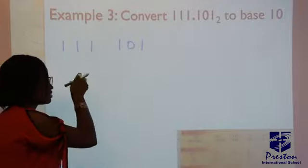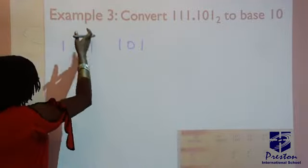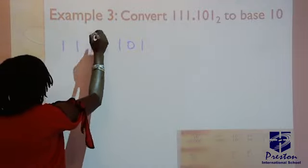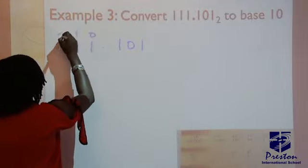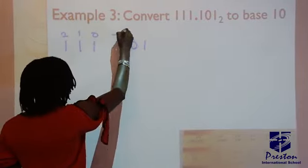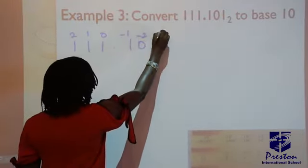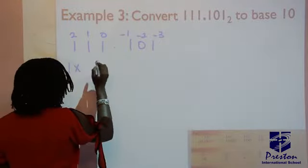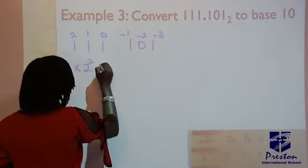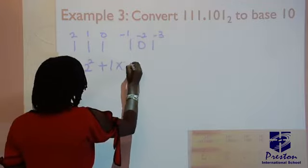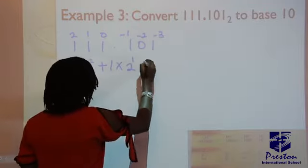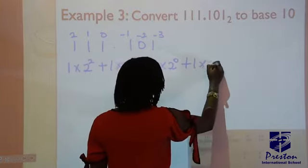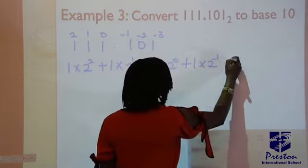So in this, when you have the decimal number, you first place the power from on the numbers before the decimal following the same method: 0, 1, and 2. And after the decimal, you start from minus 1, minus 2, minus 3. Now let's start this: 1 times 2 raised to power 2, plus 1 times 2 raised to power 1, plus 1 times 2 raised to power 0, plus 1 times 2 raised to power minus 1, plus 0 times 2 raised to power minus 2, plus 1 times 2 raised to power minus 3.